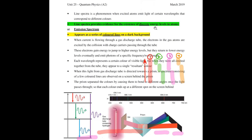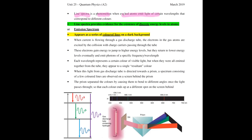If you want to prove the existence of electron energy levels — specifically the existence of discrete energy levels of your electrons — you will need to refer to something called line spectra. Line spectra is a phenomenon where excited atoms emit light of certain wavelengths that correspond to certain colors. Line spectra is important because it provides evidence for the existence of discrete, meaning specific, energy levels in atoms.